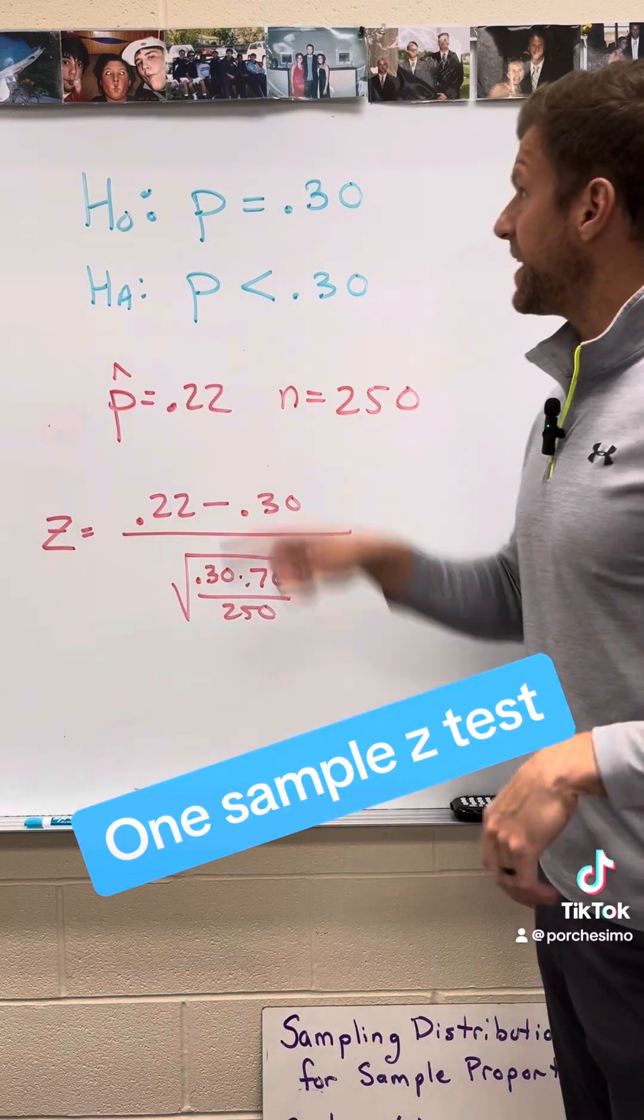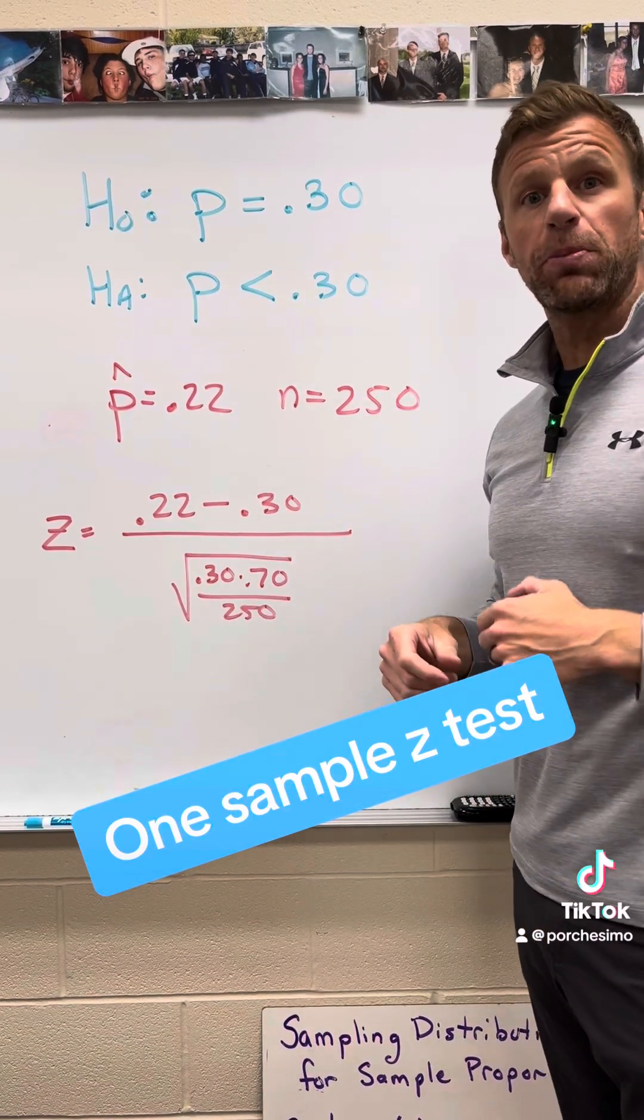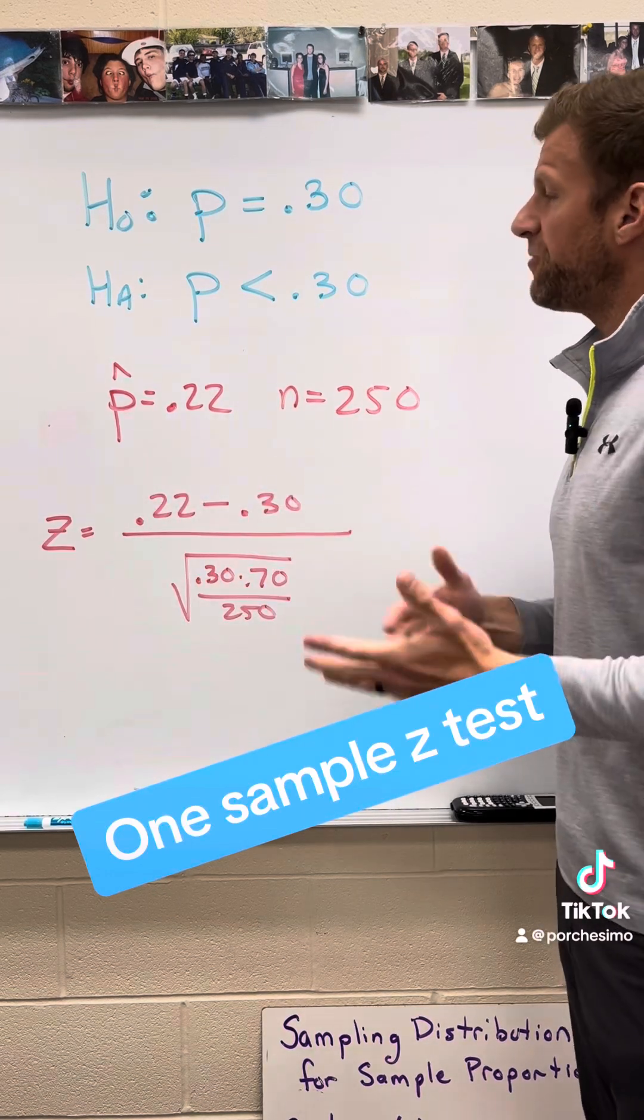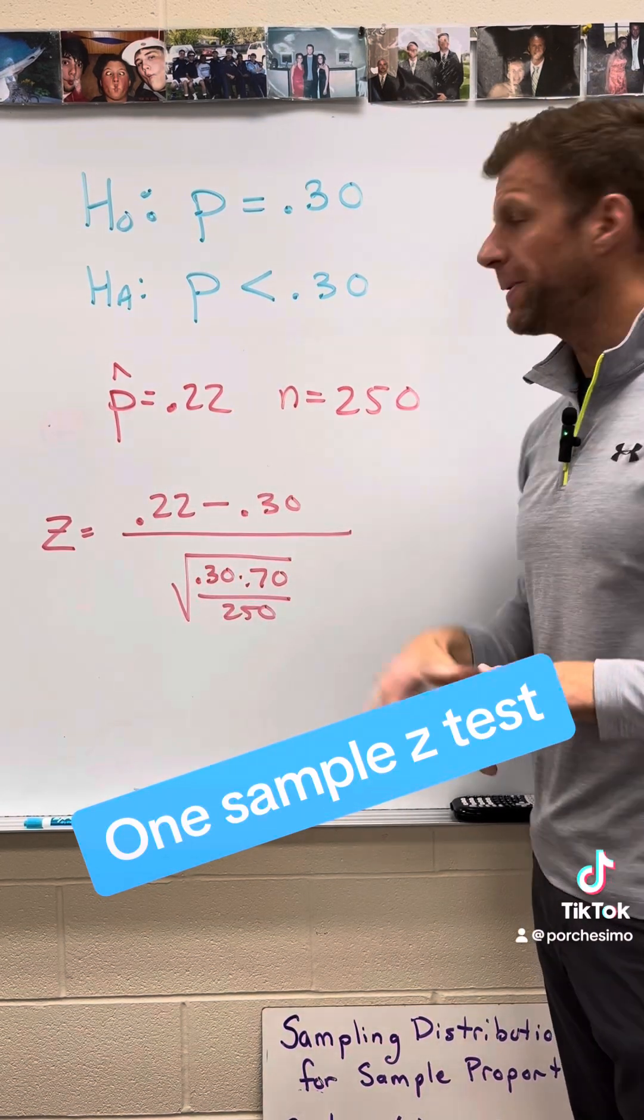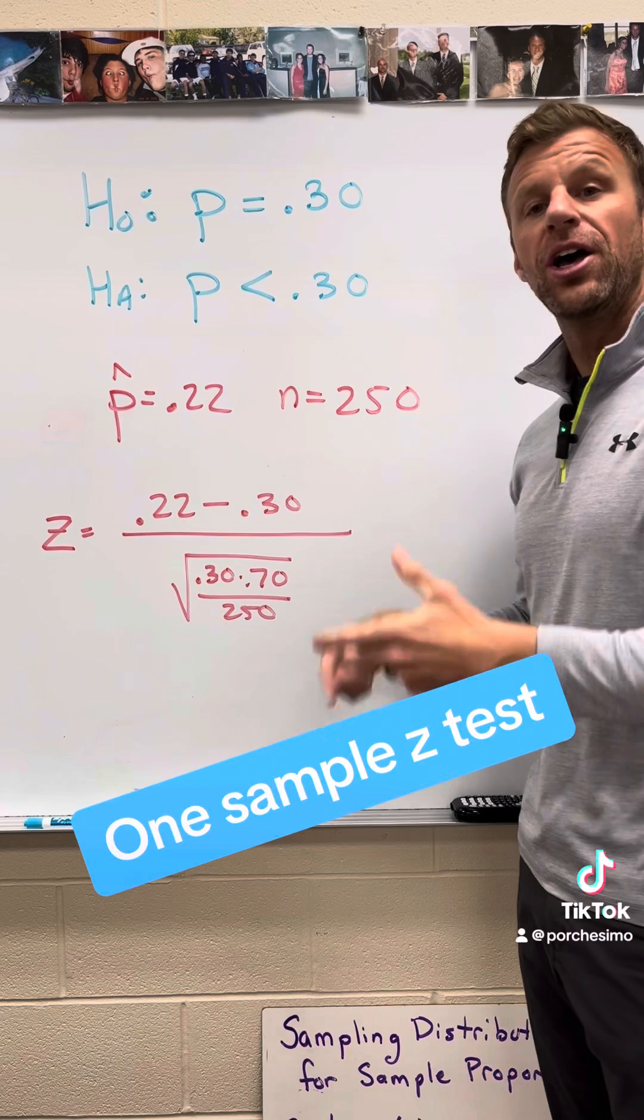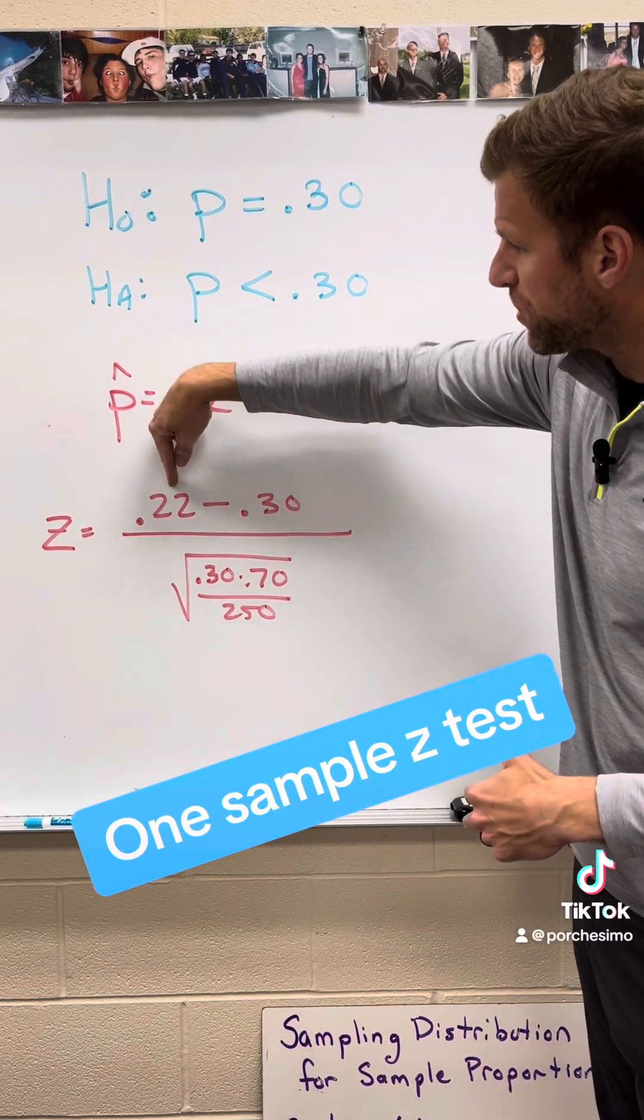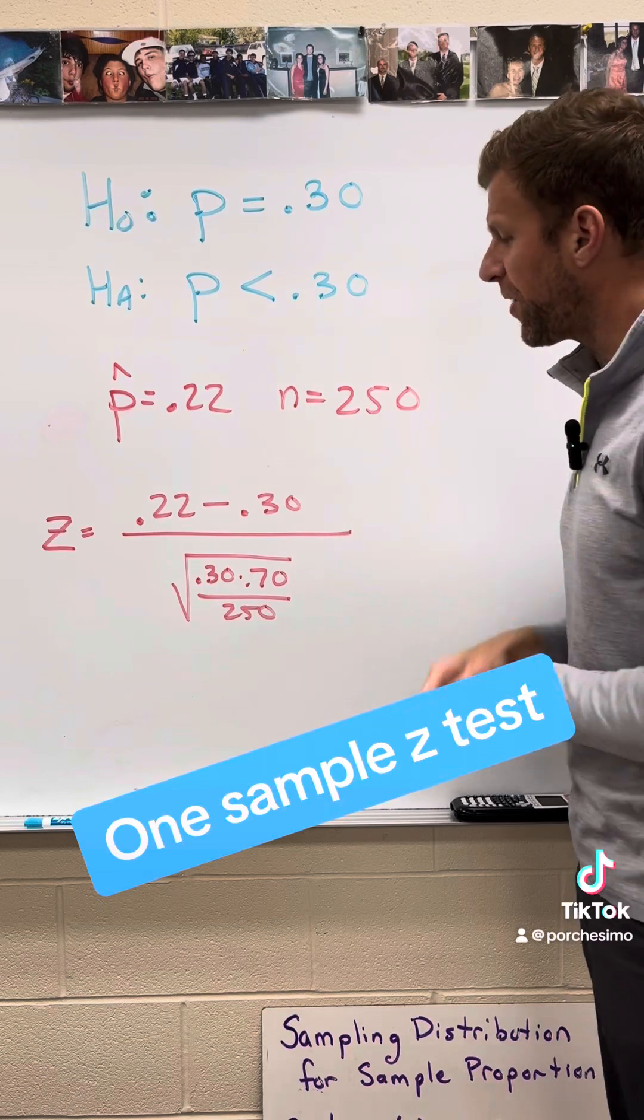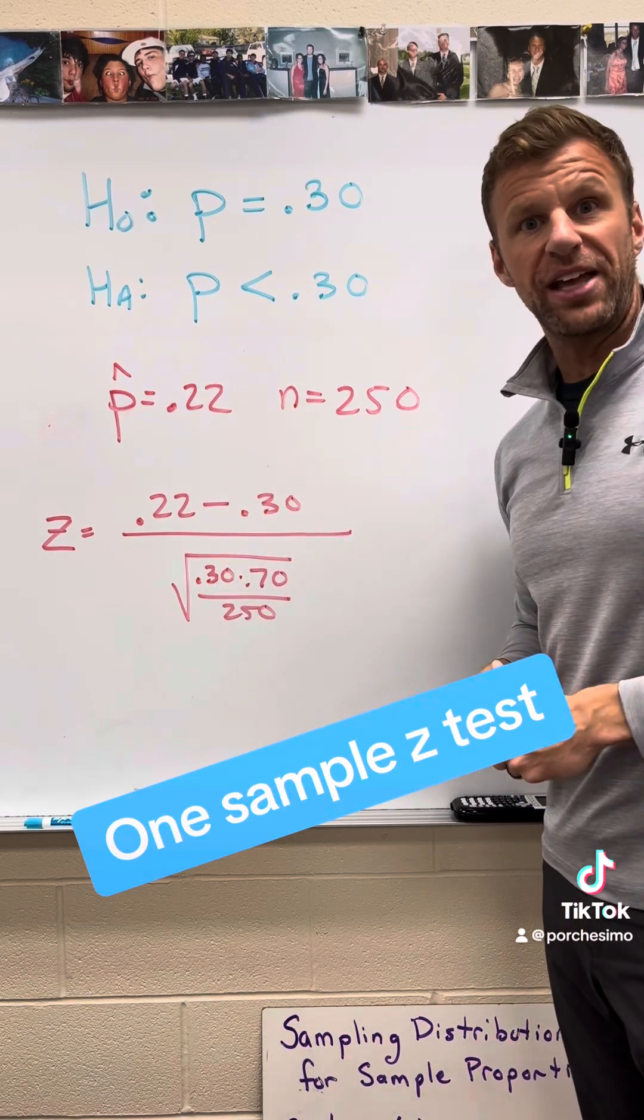Here we have a one sample z test. Our null is that the true population proportion is 30 percent. The alternative is that it's less than 30 percent. Now here's what we found in our sample: 22 percent was our p hat and our sample size is 250. So the test statistic would be taking our observed p hat minus the parameter we thought was true for the null hypothesis divided by our standard deviation.